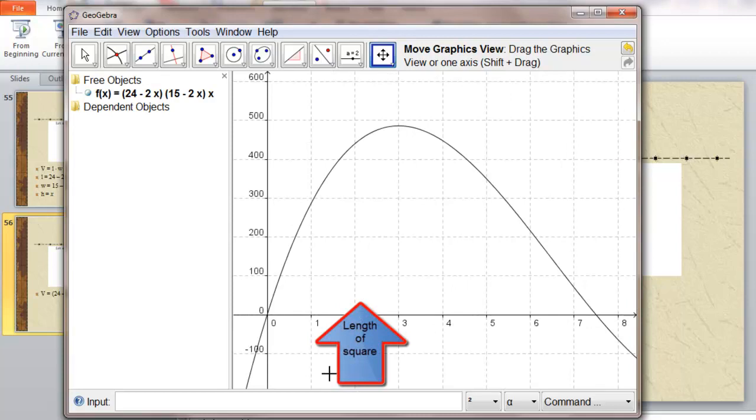Here, the x-axis represents the length of the side of the square we cut out of the sheet metal. And the y-axis represents the volume of the box, once we put it together.